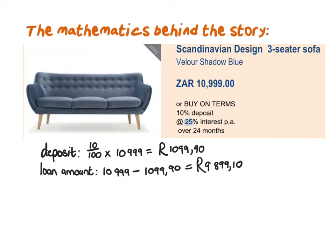Now let's consider the information given to us again: 25% interest. In this case it's bad interest because the shop owner is going to charge you more than just R9,899.10 — he wants to make additional money because it takes two years to get all his money back. This 25% is calculated on the loan amount. It's important to understand the difference between the deposit percentage and the interest percentage: the deposit percentage is what you put down to take the item home, while the interest percentage is the extra charge calculated on the loan amount.